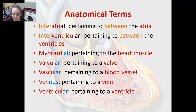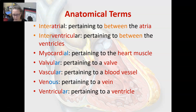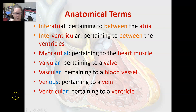Myocardial pertains to the heart muscle, valvular pertains to a valve, vascular pertains to a blood vessel, venous pertains to a vein, and ventricular pertains to a ventricle. That wraps up all the word parts and anatomical terms, and I will see you in the next video.